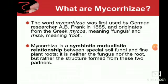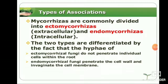Mycorrhizae are commonly divided into ectomycorrhizae and endomycorrhizae. Ectomycorrhizae are extracellular — the hyphae of ectomycorrhizae fungi do not penetrate individual cells within the roots. Endomycorrhizae fungi penetrate the cell wall and invaginate the cell membrane, living inside the plant cells.